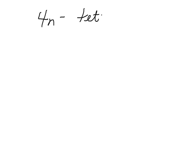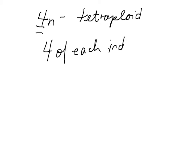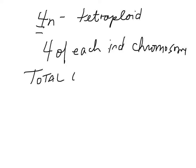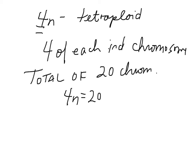Let's do one more. If you are 4n, you are tetraploid, meaning you have 4 of each individual chromosome. So let's have another example: if you have a total of 20 chromosomes, that means 4n equals 20. If you solve for n, n equals 5.